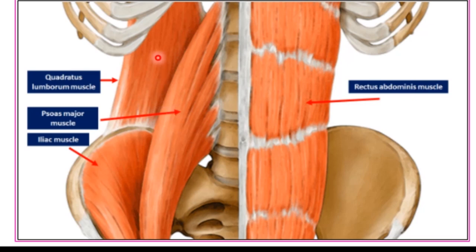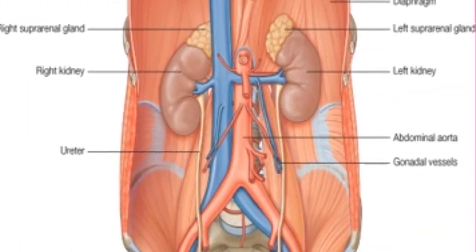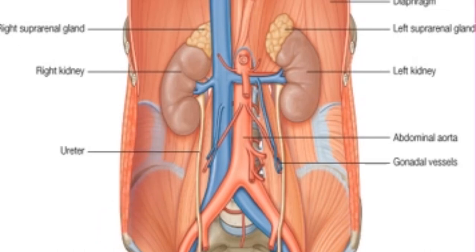Quadratus lumborum fills the space between the 12th rib and the iliac crest on both sides of the vertebral column. It lies posterior to the kidney — here is the kidney, and deep to it we see part of the quadratus lumborum. It is also bordered laterally by the transversus abdominis muscle, so medial to the quadratus lumborum is psoas major, and lateral to it is the transversus abdominis muscle.